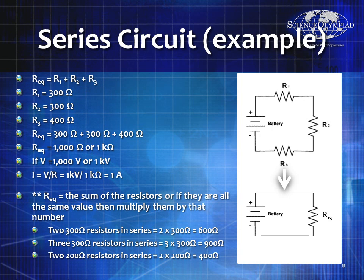R equivalent is equal to the sum of resistors, or if they're the same value you can just multiply: two 300-ohm resistors in series is 2 times 300 equals 600; three 300-ohm resistors would be 3 times 300; and two 200-ohm resistors in series would be 400. You can look for shortcuts like this once you're good at combining circuits — it's always good to have a few shortcuts to give you more time.